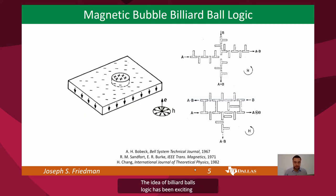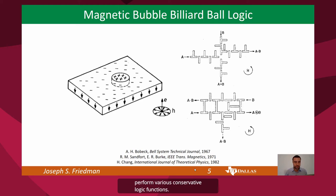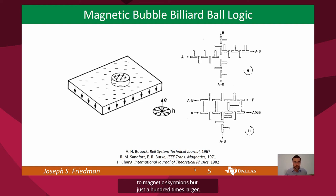The idea of billiard ball logic has been exciting from the very beginning. Very shortly after the initial conservative logic proposal, magnetic bubbles were proposed as billiard balls. These billiard balls are small regions of the magnetic material with magnetization opposite that of the rest of the material. By manipulating magnetic fields, these bubbles can be propagated to perform various conservative logic functions. While interesting, their 2 micron diameter is much too large for practical computing systems. However, as you'll see shortly, they are remarkably similar to magnetic skyrmions, but just 100 times larger.